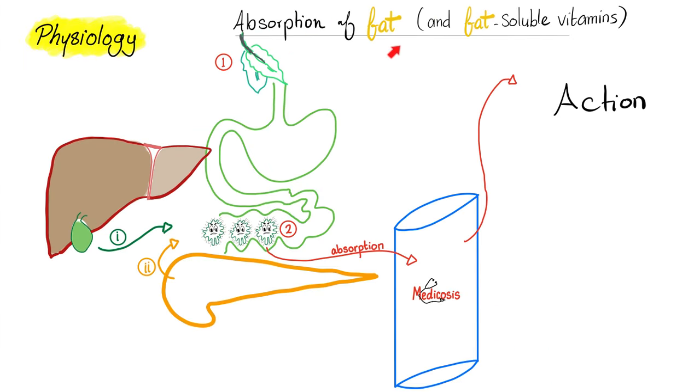But what if I want to absorb fat? Oh, that's a different story. To absorb fat, you need three organs to be robust. One, liver and biliary system. Two, pancreas. Three, the bowel or the intestine, which will do the actual absorption.